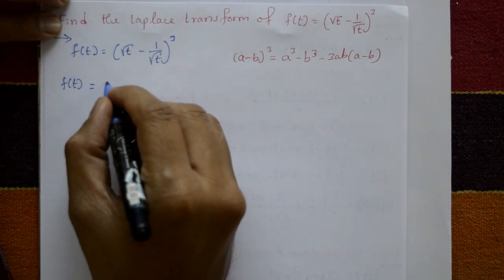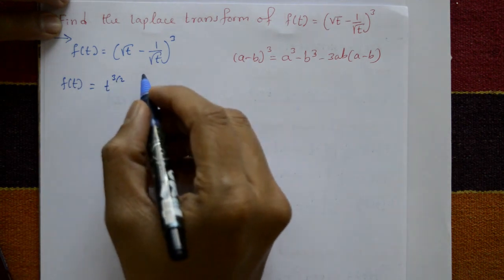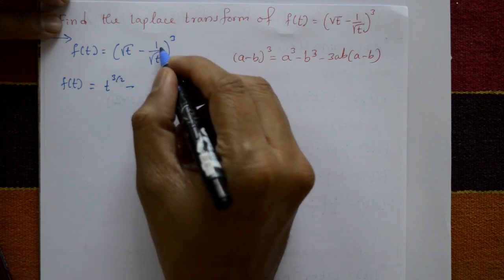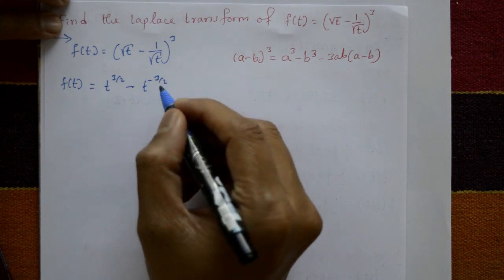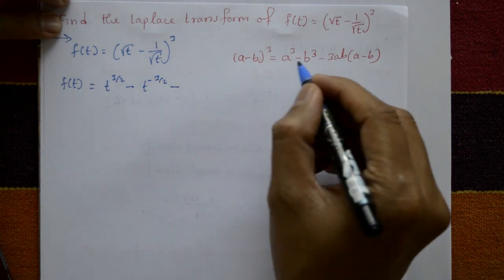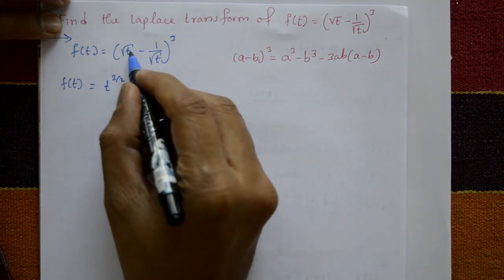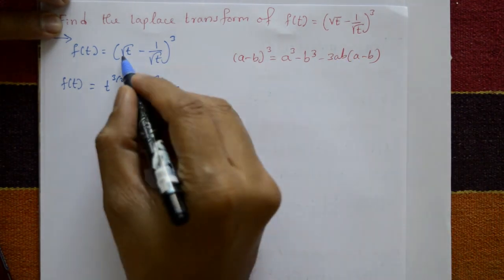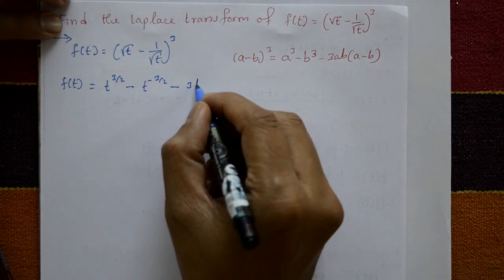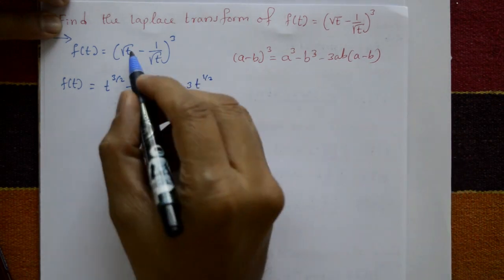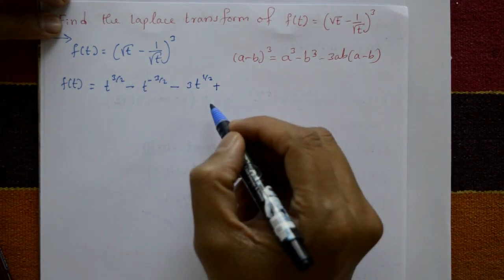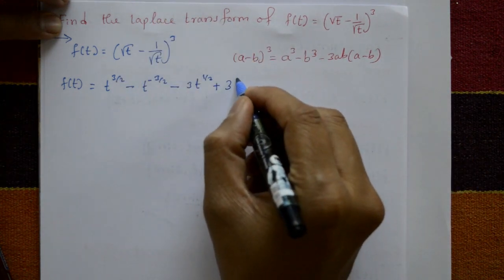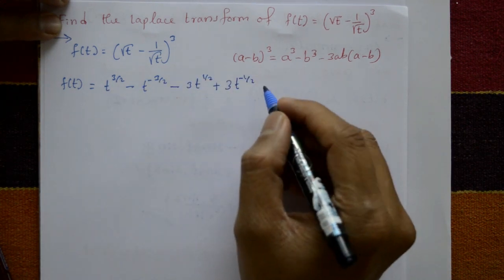So f(t) = t^(3/2) - t^(-3/2) - 3ab(a - b). For the 3ab term: √t × (1/√t) = 1, so only 3 remains. This gives: f(t) = t^(3/2) - t^(-3/2) - 3·t^(1/2) + 3·t^(-1/2).